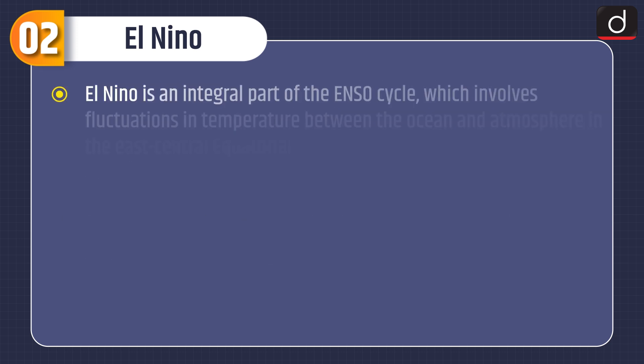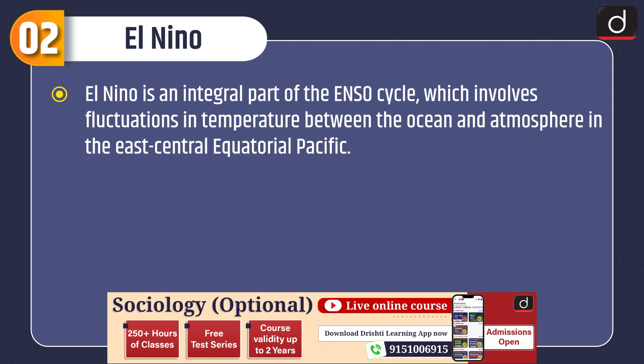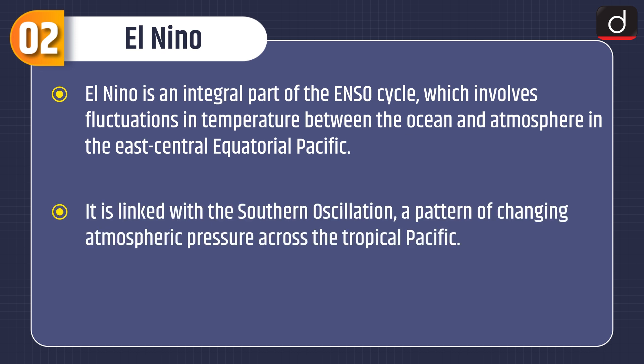El Niño is an integral part of the ENSO cycle, which involves fluctuations in temperature between the ocean and atmosphere in the east-central equatorial Pacific. It is linked with the Southern Oscillation, a pattern of changing atmospheric pressure across the tropical Pacific.